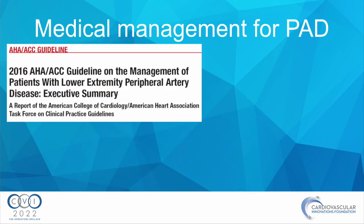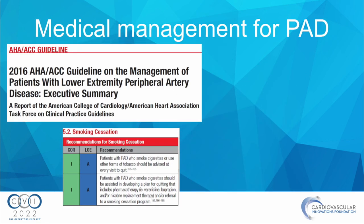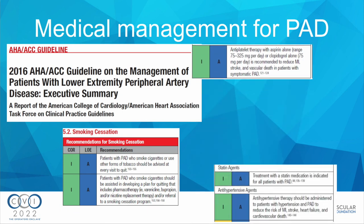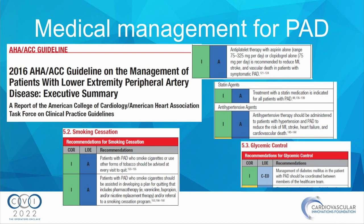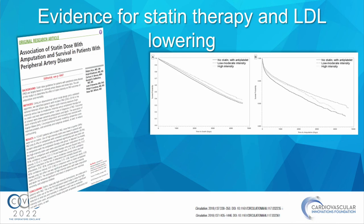Medical management is centered around smoking cessation, antiplatelets with aspirin, lipid lowering with statins, glycemic control, and cilostazol. From VA national data, statins decrease major cardiac events in people with PAD, and even low-dose statins seem to impact likelihood of amputation. Analysis from the 4A trial showed that at really low LDL levels, you can see changes not just in cardiac outcomes but also in limb outcomes in people with PAD.